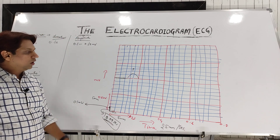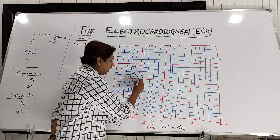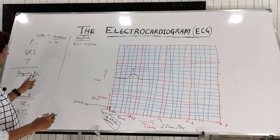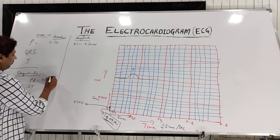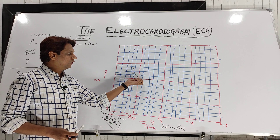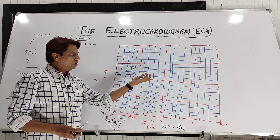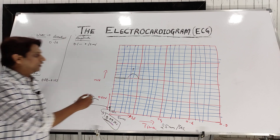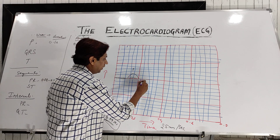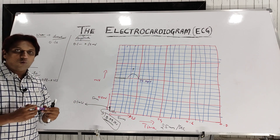After the P wave, the depolarization current passes through the AV node, and that forms the PR segment. The PR segment duration varies from 0.08 to 0.12 seconds — roughly 2 to 2.5 small squares. Two small squares equals 0.08 seconds. This PR segment appears as an isoelectric line, as we discussed in the last class.